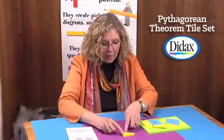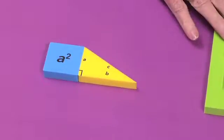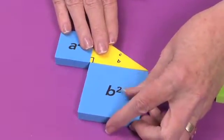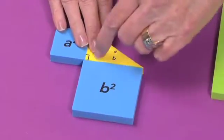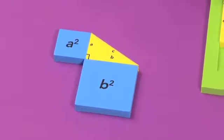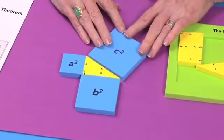The formula is A squared, so the square of side A is represented with this foam tile, plus B squared. Here is the foam tile that represents B squared, which is the square created with this side, and it needs to equal the square of side C.